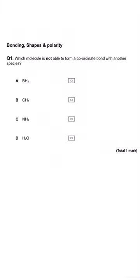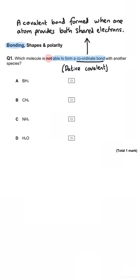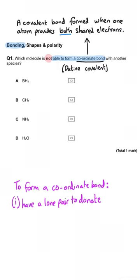Which molecule is not able to form a coordinate bond with another species? A coordinate bond or dative covalent bond is a covalent bond formed when one atom provides both of the shared electrons. In order for a molecule to be involved in a coordinate bond, it either needs to donate a lone pair of electrons or receive the lone pair into the coordinate bond.